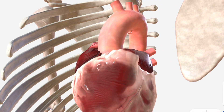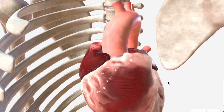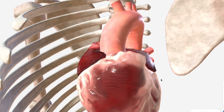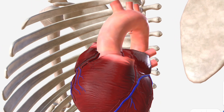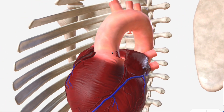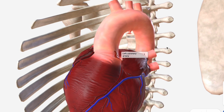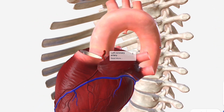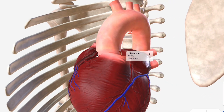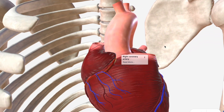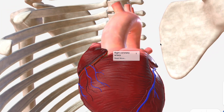The ascending aorta takes oxygenated blood from the left ventricle through to just about the entirety of the rest of the body. It only has two small branches, which come off immediately after it has left the left ventricle: we have the left coronary artery departing to the left, and the right coronary artery, which departs anteriorly.